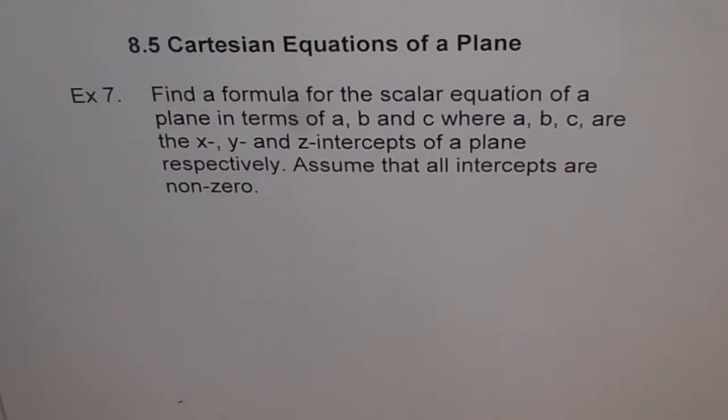8.5 Cartesian equations of a plane. Example 7. Find a formula for the scalar equation of a plane in terms of A, B and C, where A, B and C are the X, Y and Z intercepts of a plane, respectively. Assume that all intercepts are non-zero.